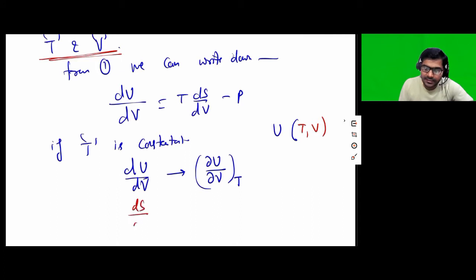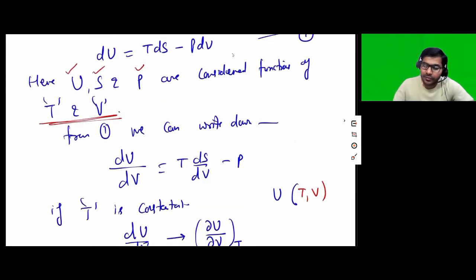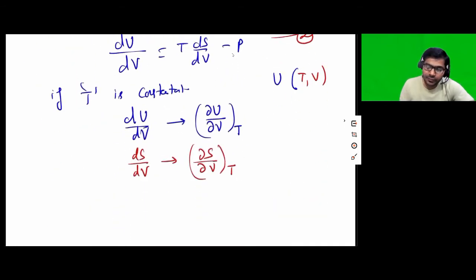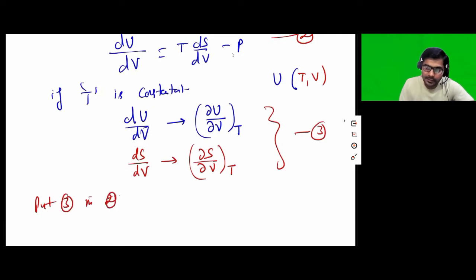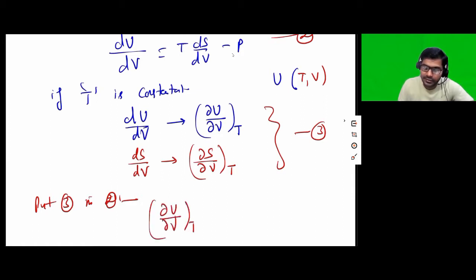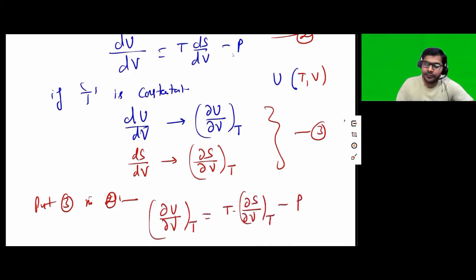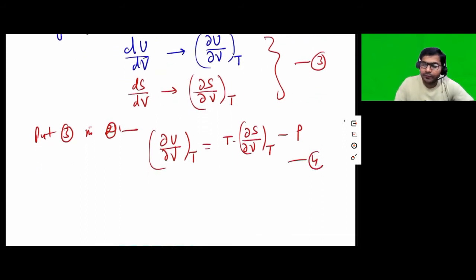Similarly, dS by dV is as good as writing del S over del V at constant temperature. So putting this into the equation, what we get is del U by del V at constant T is equal to T times del S over del V at constant T minus P. Let's call this equation number 4.